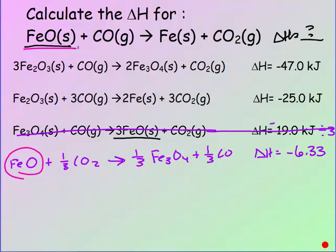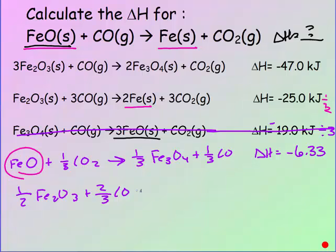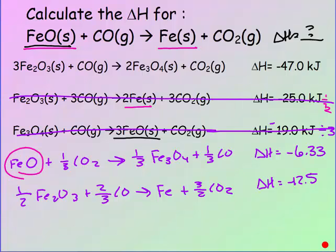Next, carbon monoxide: I want it as a reactant and it appears as a reactant in more than one equation, so leave it to the end. Move on to iron — iron is a product in the target, and it's a product in the second reaction, so that's correct. But we have two irons and only need one, so divide the second reaction by two. Note: I mistakenly wrote two-thirds CO; it should be three-halves CO. The delta H becomes negative 25 divided by two. Be as neat as possible on these problems.